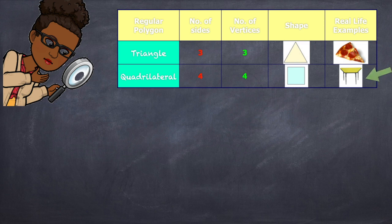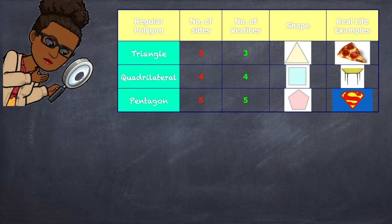Pentagon. The word pentagon means five. Therefore, it has five sides and five vertices. I'm sure you've seen that. Everybody knows about Superman. That sign is an example of a pentagon.